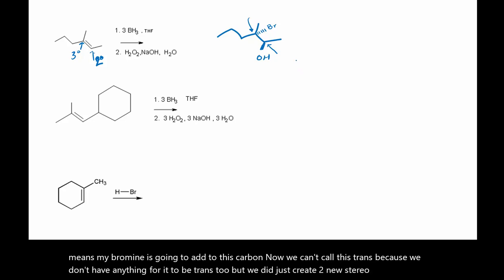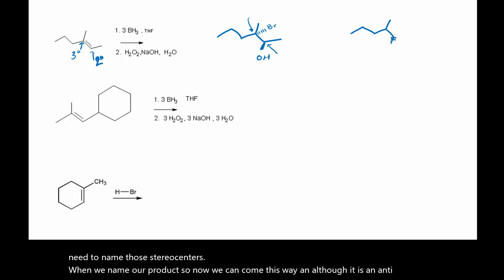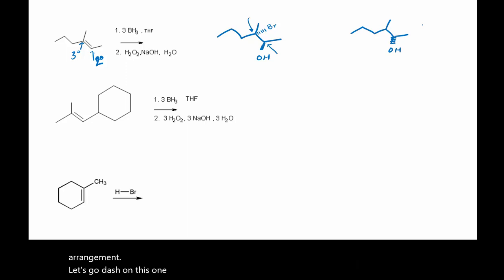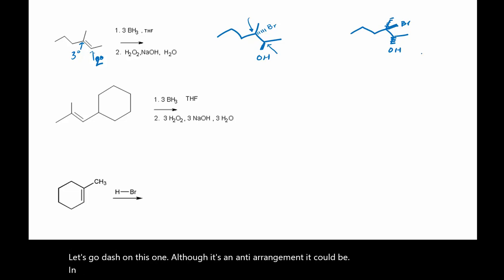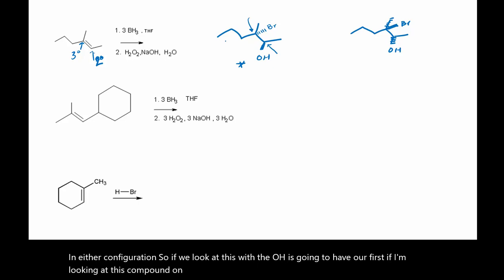So we need to name those stereocenters when we name our products. Now we can come this way and although it is an anti-arrangement, it could be in either configuration. So if we look at this with the OH — looking at the compound on the left — our OH is going to have the first priority on this bottom stereocenter.